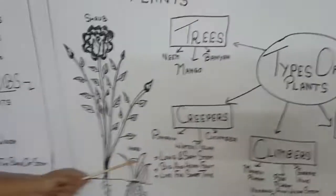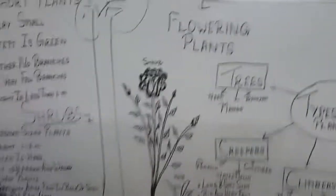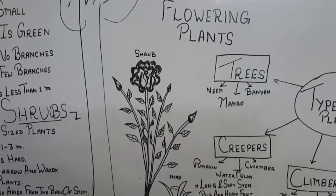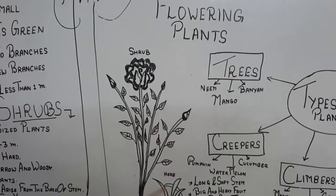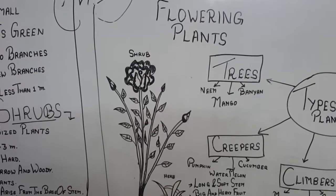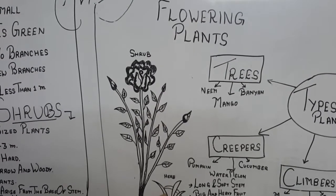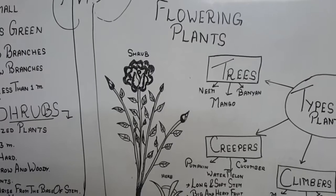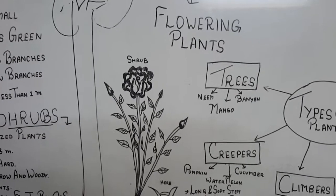If we look at these plants, these are very short plants — we call them herbs. You can see they are almost green; even their stem is very soft, tender and green. And they have a fibrous root.